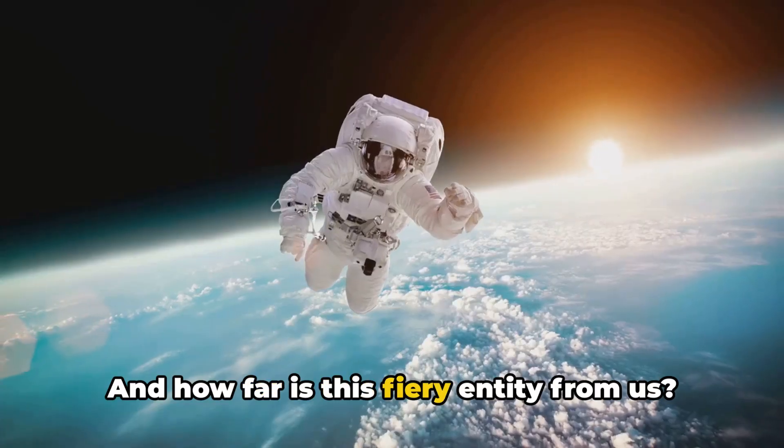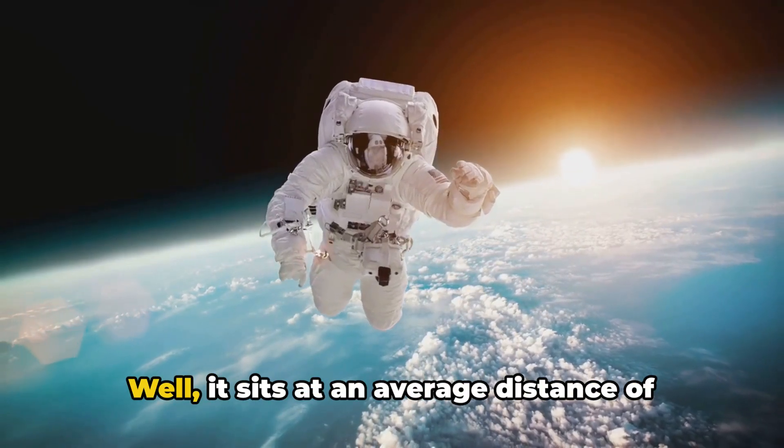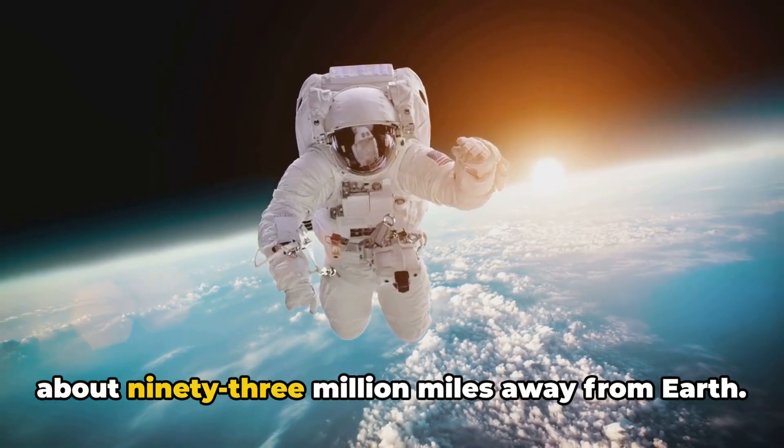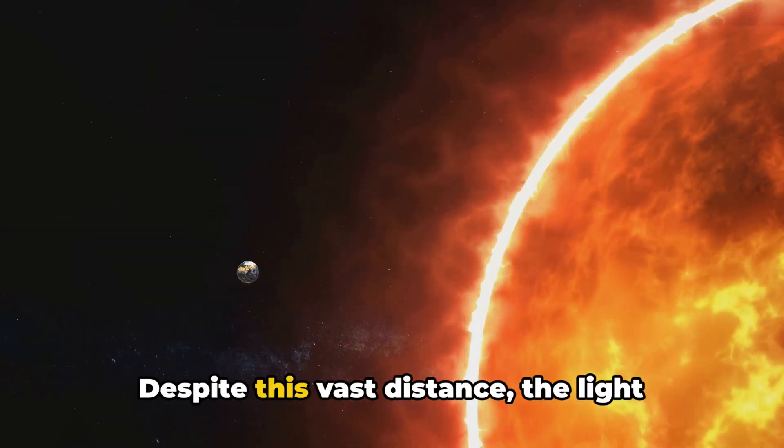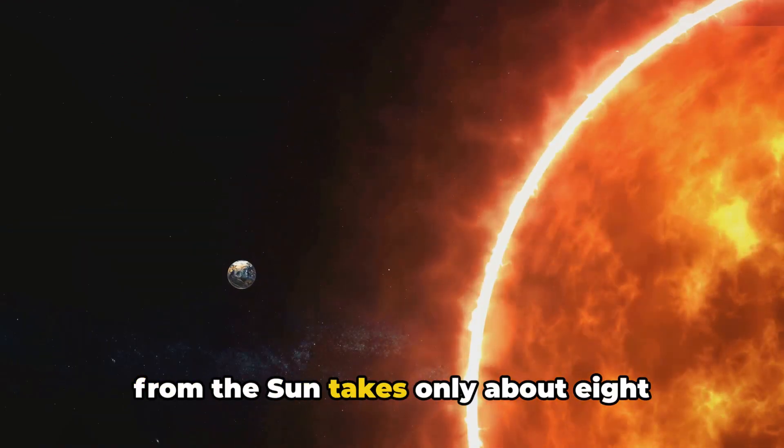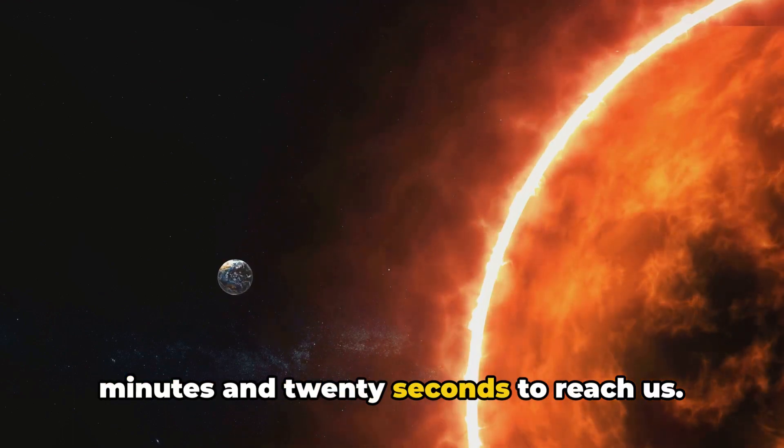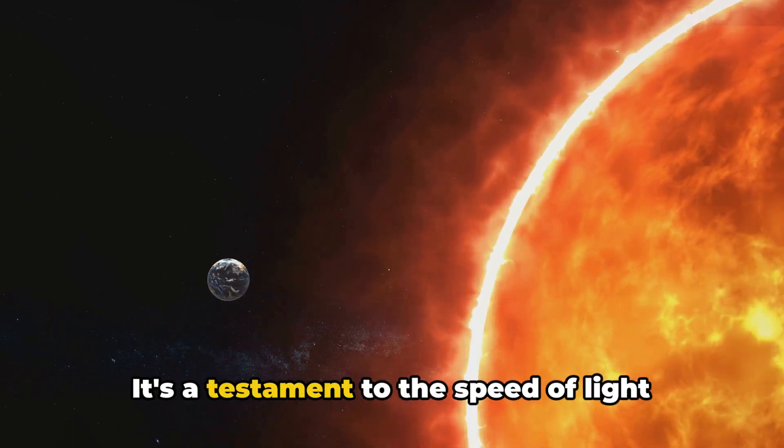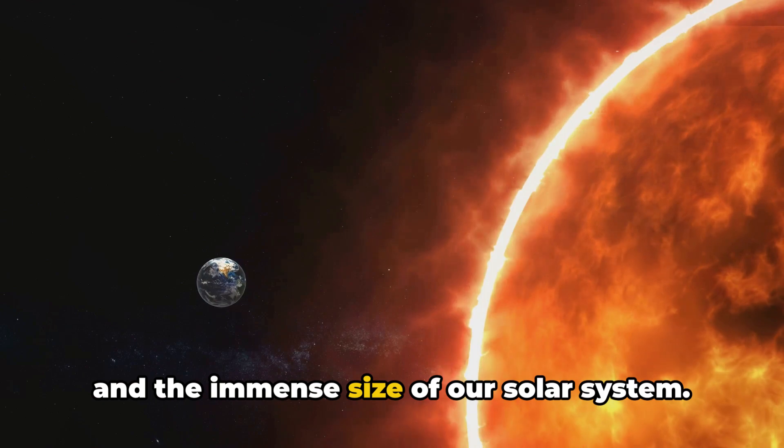And how far is this fiery entity from us? Well, it sits at an average distance of about 93 million miles away from Earth. Despite this vast distance, the light from the sun takes only about 8 minutes and 20 seconds to reach us. It's a testament to the speed of light and the immense size of our solar system.